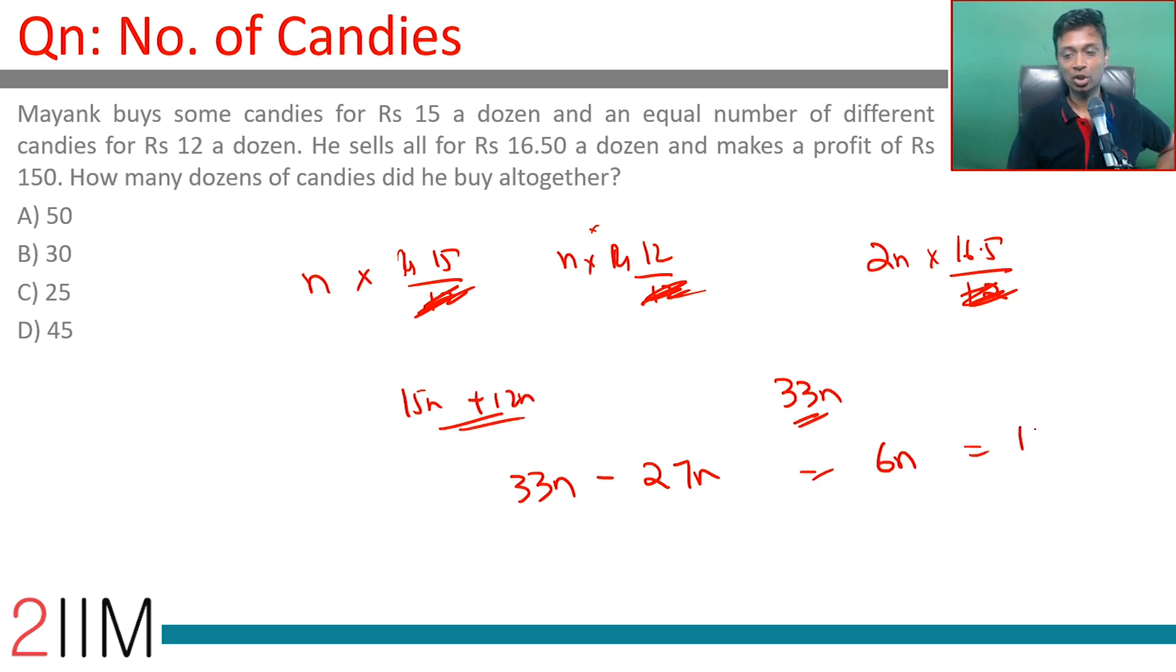So n is 25. He buys 25 dozens at this price, 25 dozens at this price, and sells the 50 dozens at this price. How many dozens of candies did he buy altogether?